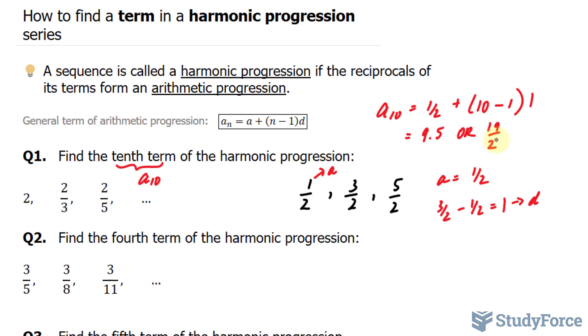Once you have found the tenth term of 19 over 2, recall that at the beginning we took the reciprocal of each of these numbers. So we need to take the reciprocal of this for our final answer of 2 over 19.